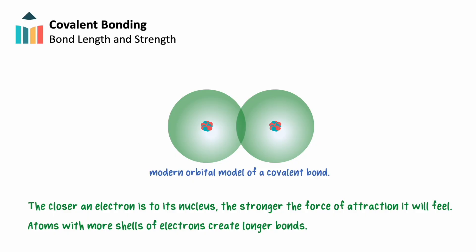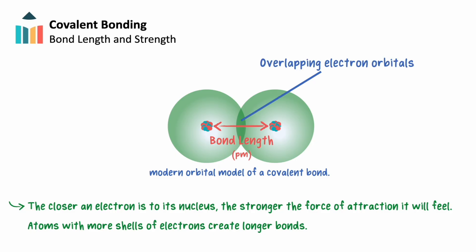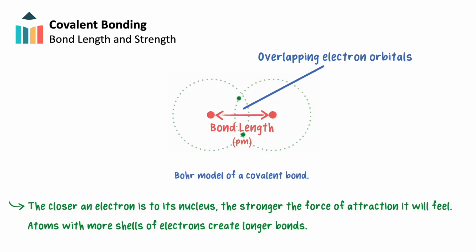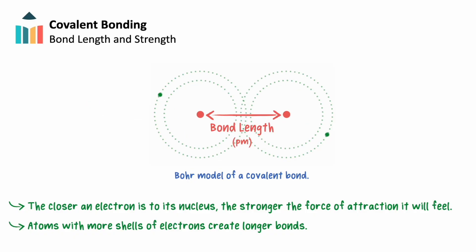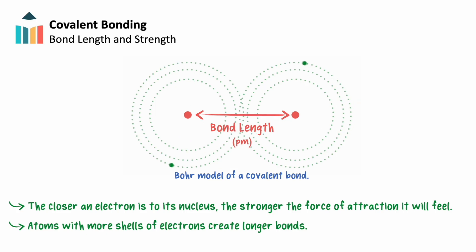Each of our covalent bonds will have a different length and strength. Bond length refers to the average distance between the nuclei of two bonded atoms, and is often measured in picometers, where one picometer is equal to 1×10⁻¹² meters. In general, the closer an electron is to its nucleus, the stronger the force of attraction it'll feel. When a covalent bond is formed, the outer electron orbitals of two atoms overlap, sharing some number of valence electrons. The length of this bond is determined in part by each atom's number of electron shells, with each additional shell lengthening the bond. As bond length increases, its shared electrons feel a weaker and weaker attractive force to each atom's nuclei, and thus form a weaker bond.